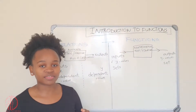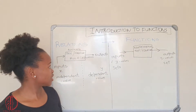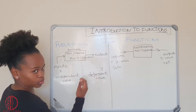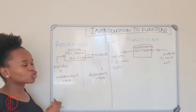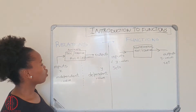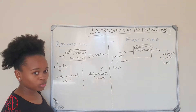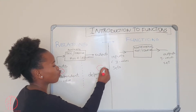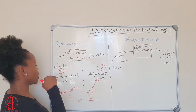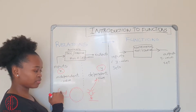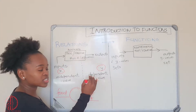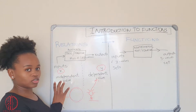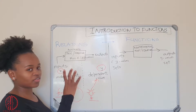Before we define what a function is, let's define relations. A relation is anything that takes inputs and gives out outputs — it could be a tool, a machine, a rule, or an equation, as long as it takes in inputs and gives out outputs. In our case, we're taking x values and giving y values. Inputs are x — independent values — and outputs are y — dependent values.